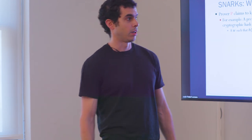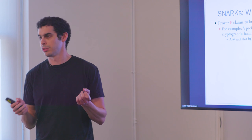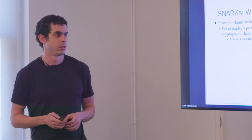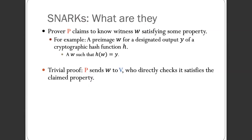In a SNARK, an untrusted prover claims to know a witness satisfying some property. As a simple example, the prover might claim to know a preimage under some cryptographic hash function of a designated output — say, the prover claims to know a W that hashes to a certain string Y under SHA-3. The trivial proof is just to provide the witness to the verifier, who can directly check it by evaluating SHA-3 on W and confirming the output.